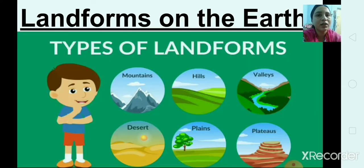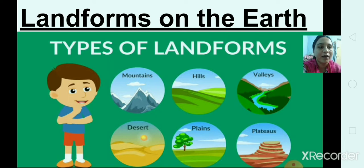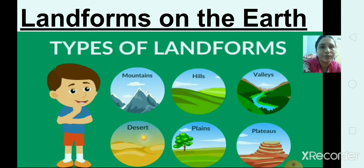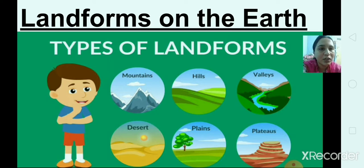Now we will see about the land forms on the earth. Plains are the flat lands. Hills and mountains are higher than plains, and mountains are the highest places in the world. The peaks of most mountains are covered with snow. Forests are the areas where many trees grow. The land forms present on the earth are: mountains, hills, valleys, desert, plains and plateaus.